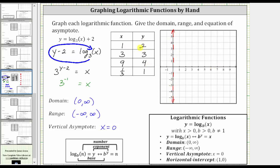Now we'll use the table of ordered pairs to plot four points on the graph. The first point is one comma two, which is here. Then we have three comma three. Nine comma four, which is here. And we also have one third comma one, which is approximately here.